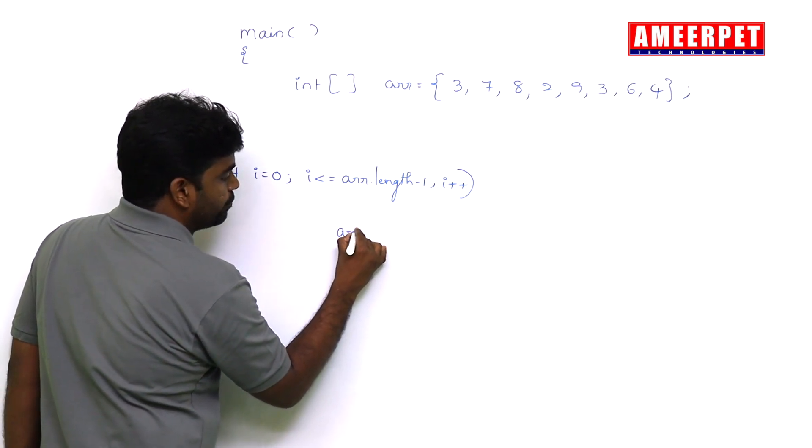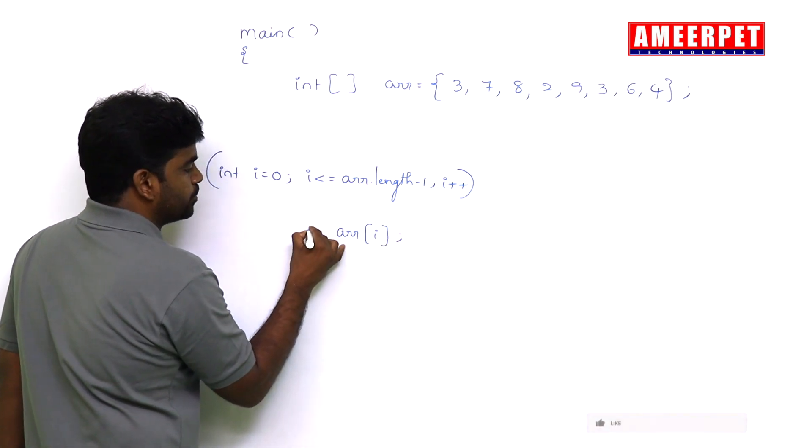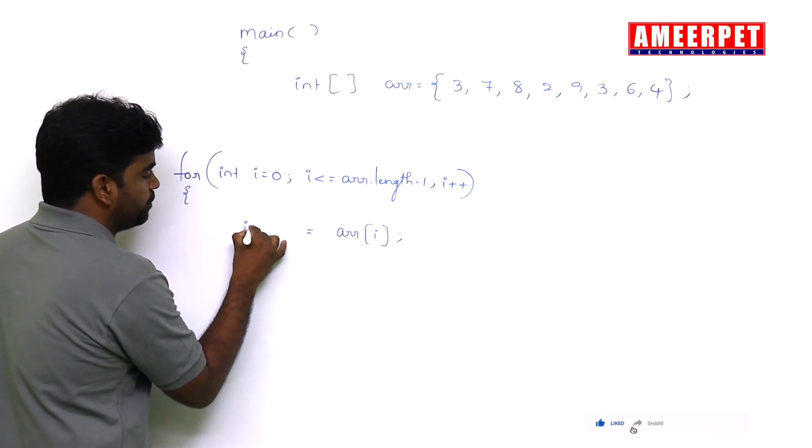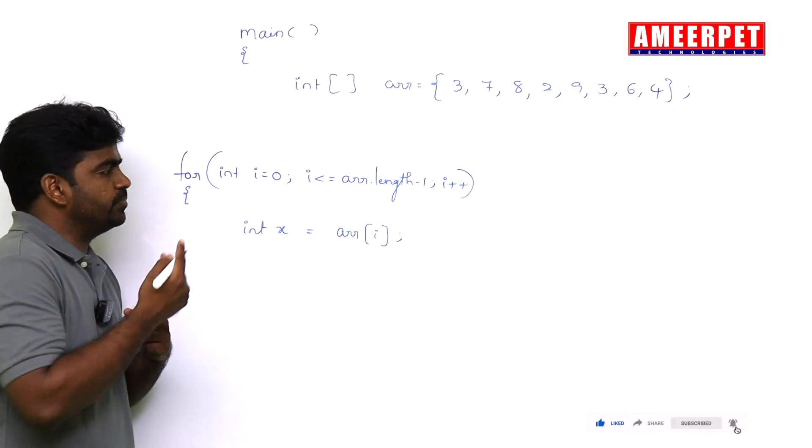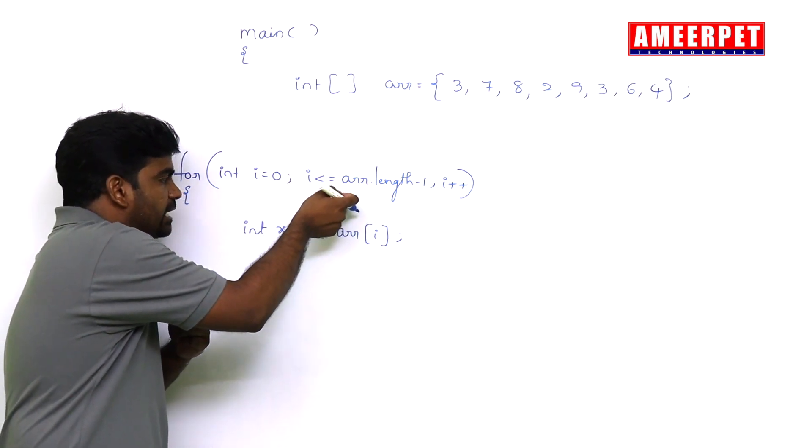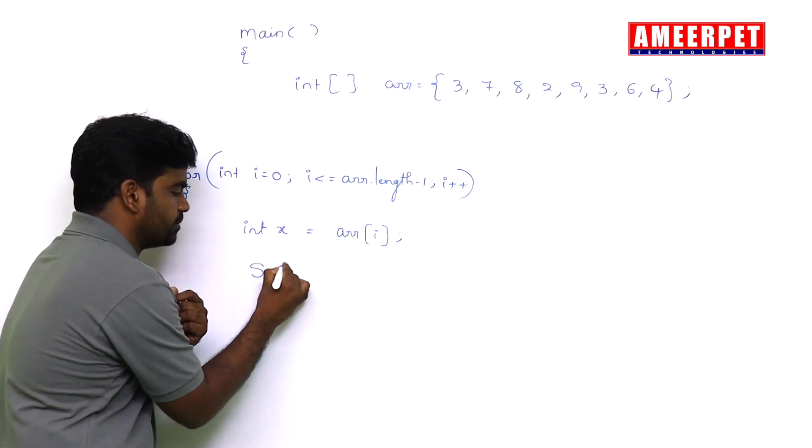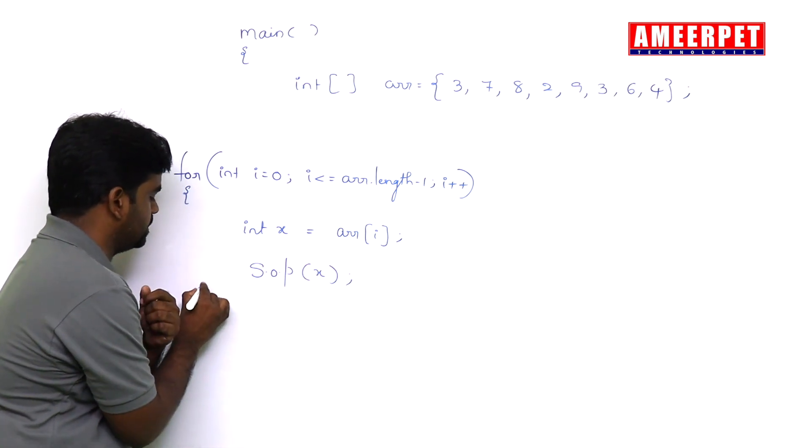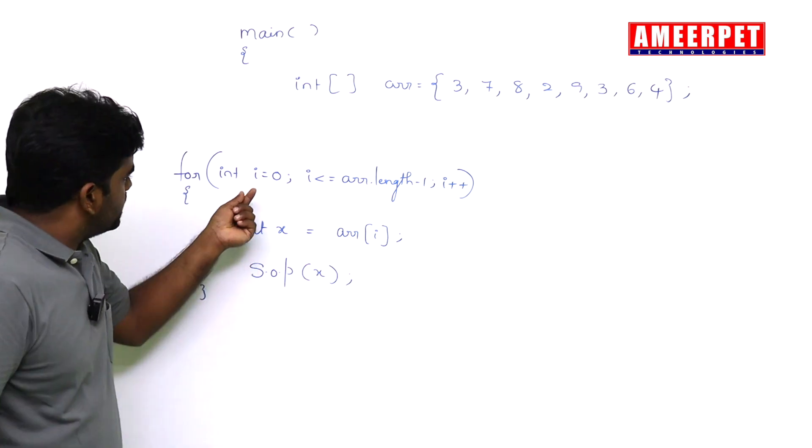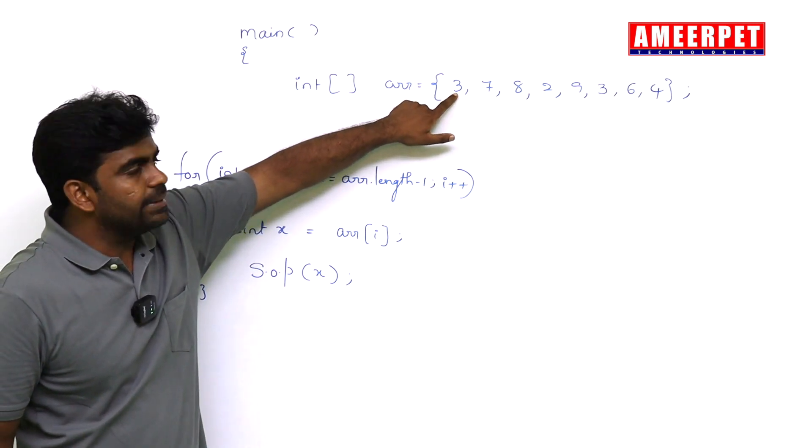I'm starting from zero index and the total length, how many elements are present, minus one for each element. Now what I am doing? arr[i], nothing but each location element we are taking into one variable, suppose x. Why? I'll explain. The first element will come and store into x. Now we process this x. I don't want to process, simply I want to display that x.